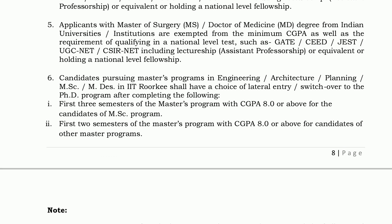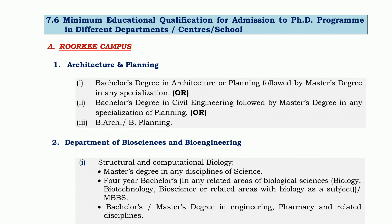Candidates pursuing a master's program in Engineering, Architecture, Planning, MSc, or M.Design in IIT Roorkee shall have a choice to lateral entry or switch over to the PhD program after completing the first 3 semesters of the master's program with CGPA of 8 or above. Candidates for other master's programs must meet common eligibility requirements. You can also check minimum education qualifications department or center or school-wise.